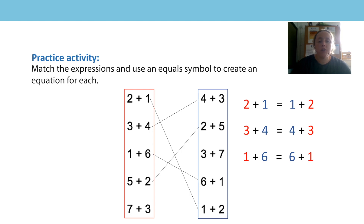Five add two would match to two add five. Both expressions have a five and a two in them. In the first expression in the red box, the five comes first and the two comes second, whereas in the blue box in the second expression, the two comes first and the five comes second. The sum of both expressions is seven, so we can use an equal sign between them.